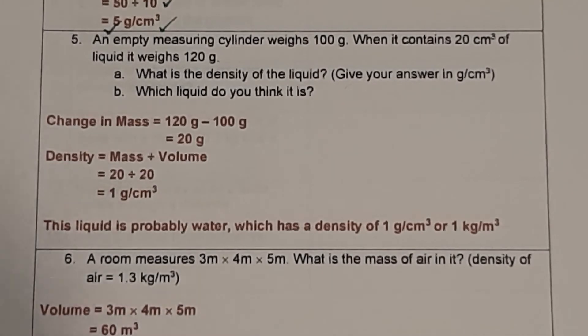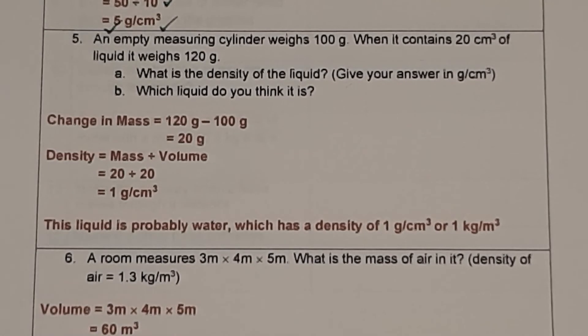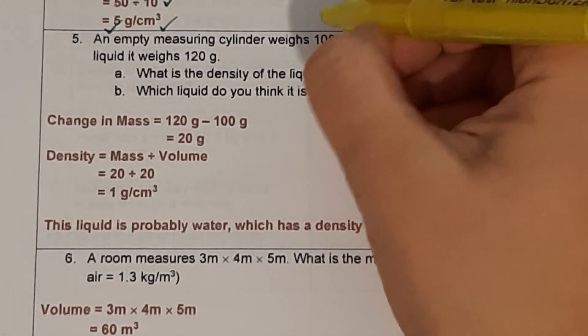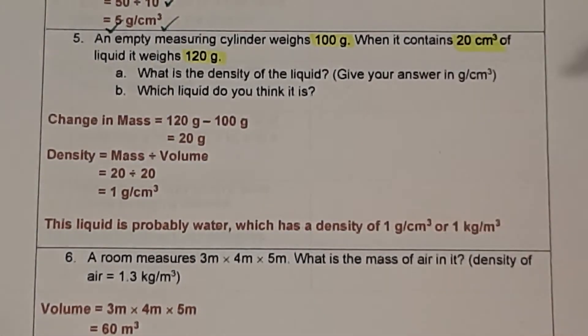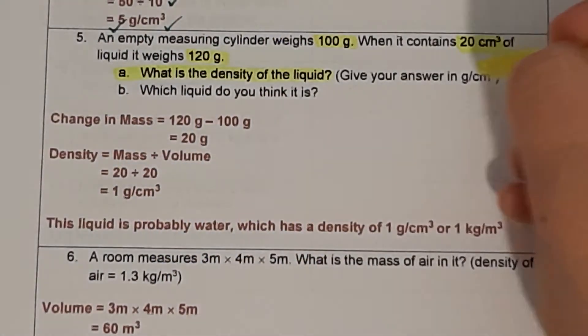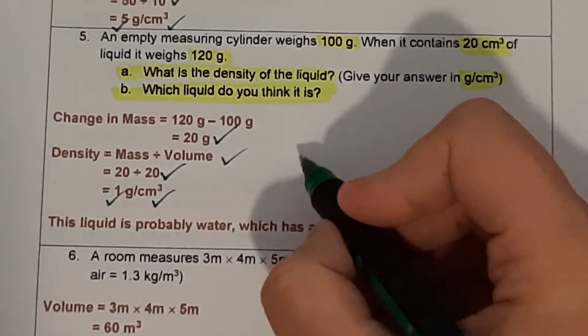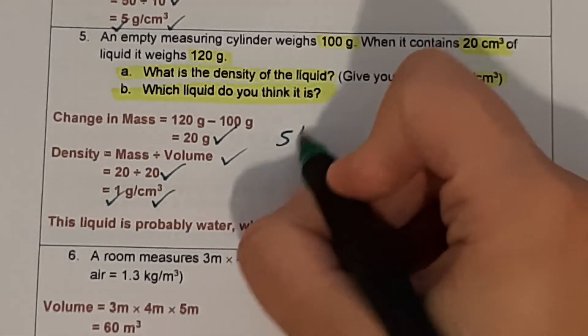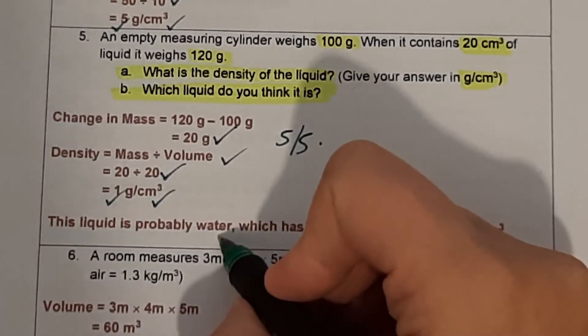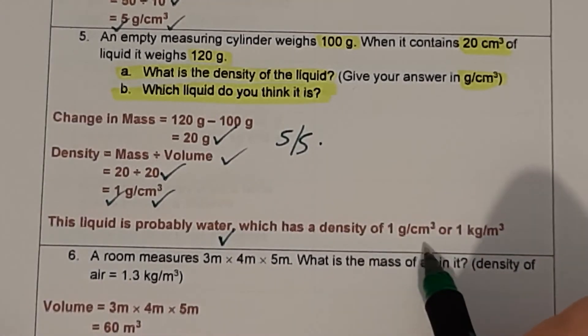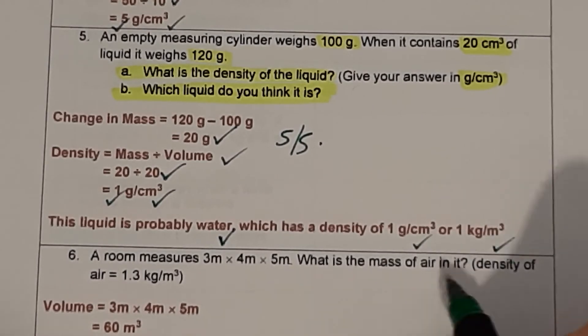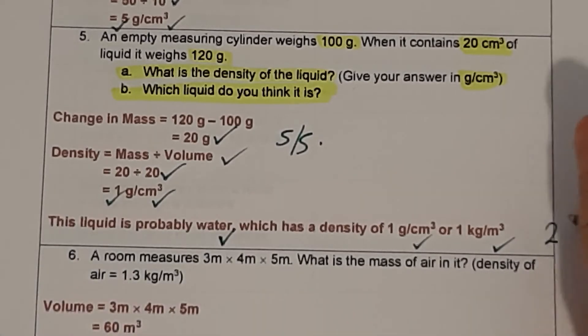Question 5: an empty measuring cylinder weighs 100 grams. When it contains 20 centimetres cubed of liquid, it weighs 120 grams. Part A: what is the density of the liquid in grams per centimetres cubed? The change in mass is 120 minus 100 equals 20 grams. Density equals 20 divided by 20 equals 1 gram per centimetres cubed. Part B: what is this liquid? It's probably water, because water has a density of 1 gram per centimetres cubed, which is the same as 1 kilogram per metres cubed. Mark out of 7 for this question.